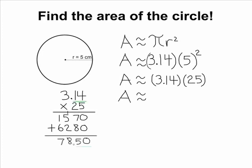Notice, in this example, there are two numbers after the decimal, and in your answer, the same must be true. So 78 and 50 hundredths square centimeters is the area of the circle.